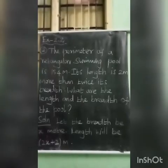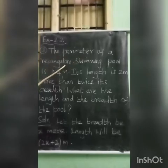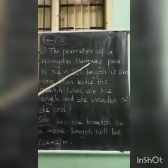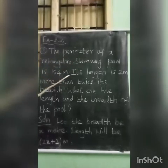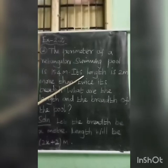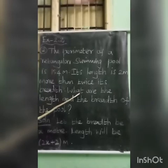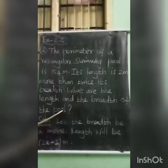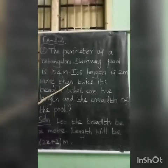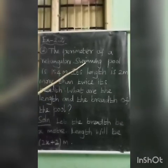Exercise 2.2, second sum. The perimeter of a rectangular swimming pool is 154 meters. Its length is 2 meters more than twice its breadth. What are the length and the breadth of the pool?